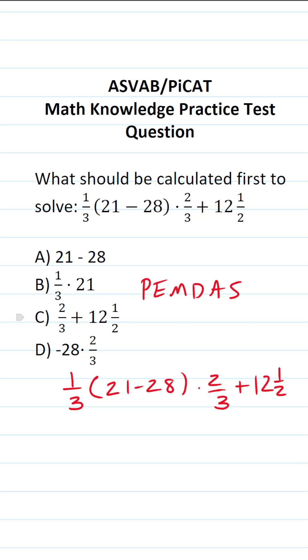This order of operations tells you the order in which to work something like this out. That is to say, you're always going to do parentheses first if there is anything in parentheses. After that, you're going to do exponents next.